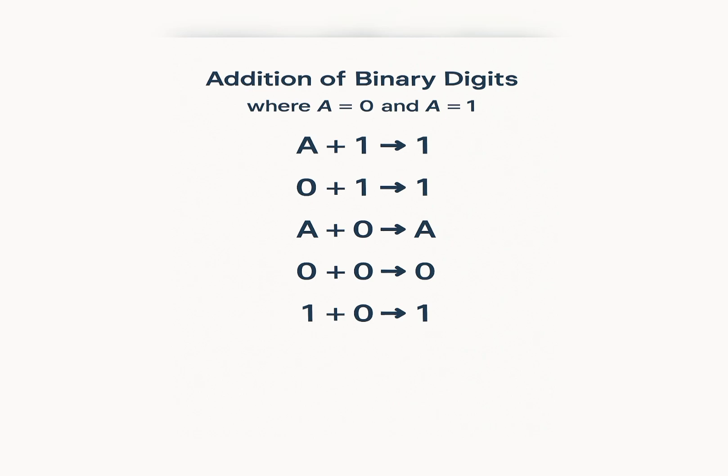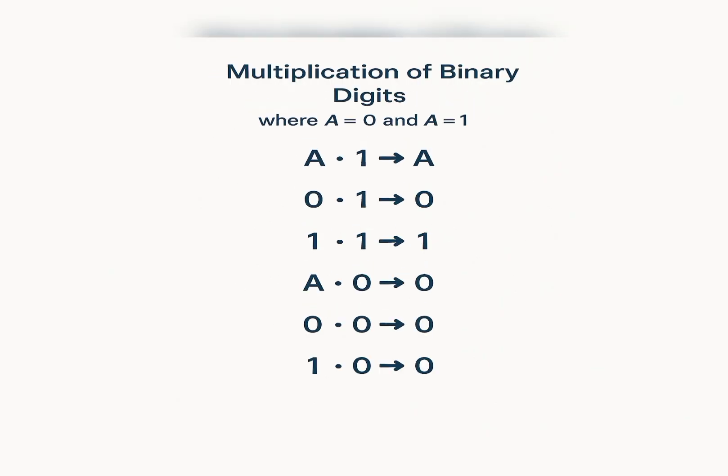The next concept is multiplication of binary digits. Where a equals zero or a equals one: a times one equals a, and zero times one equals zero. Remember what we said about multiplication with zero — it equates to zero, eliminating everything. That's the same principle with multiplication of binary digits.